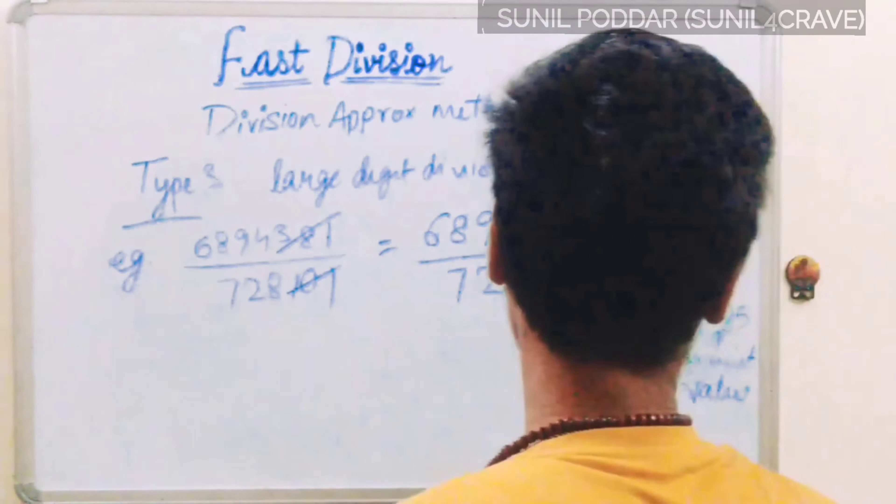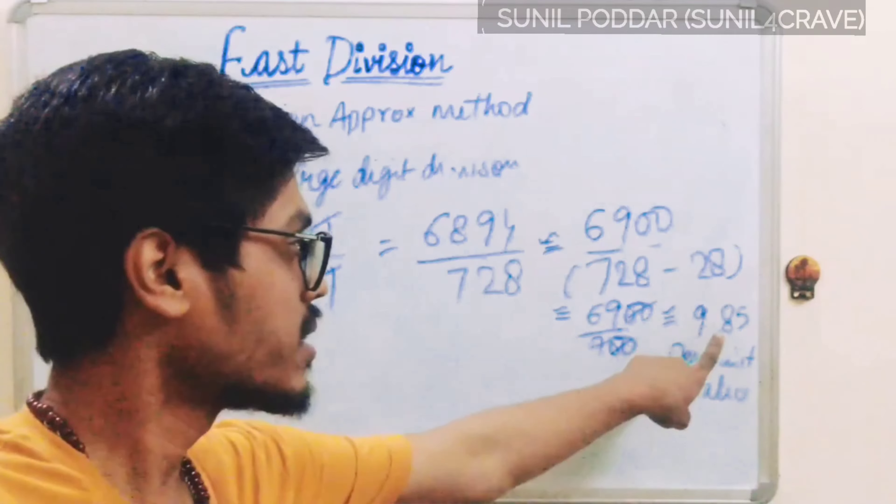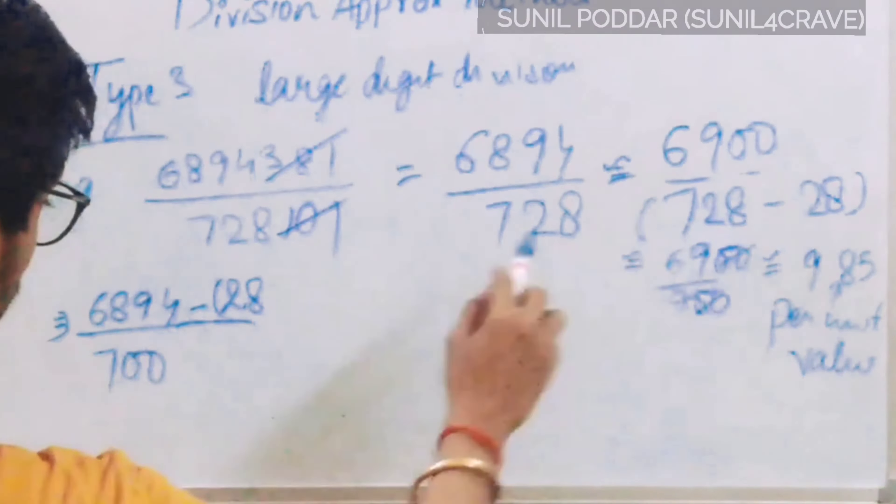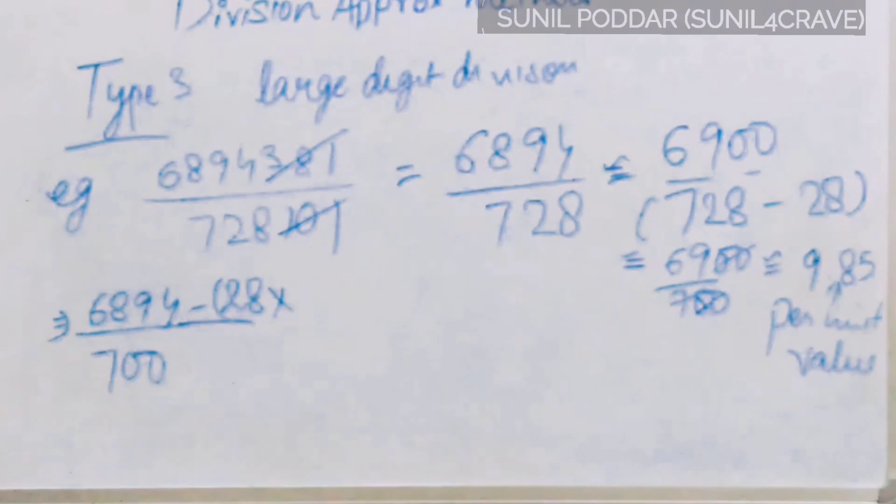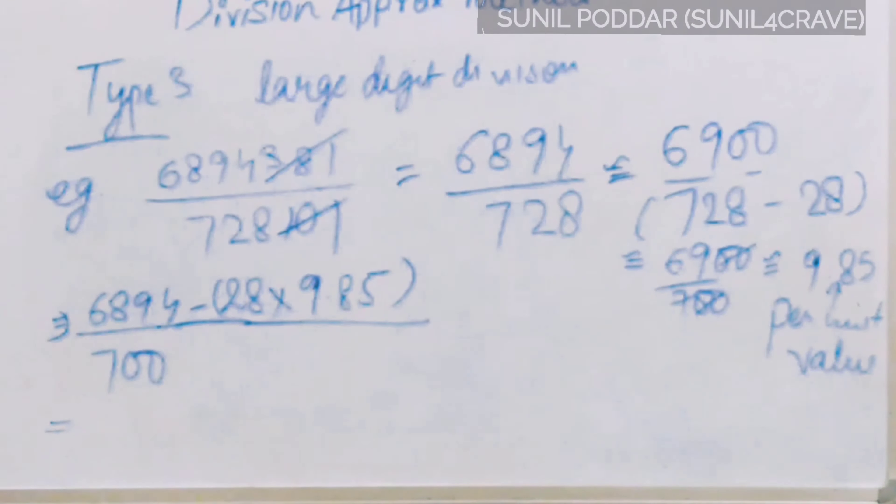And the base 700. As it is easy to do by the base concept, now minus 28. As we have subtracted to make it 700, and multiply it per unit value, that is our 9.85. On solving the numerator, 6,894 minus 274.4 upon 700.